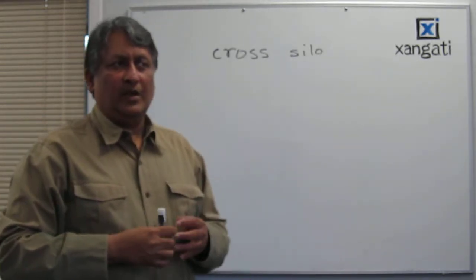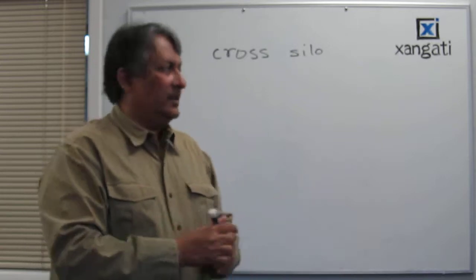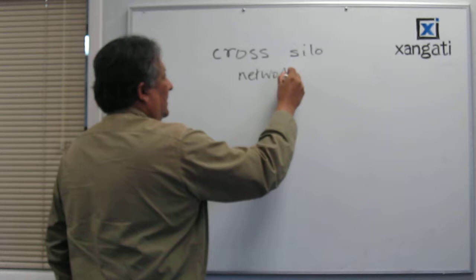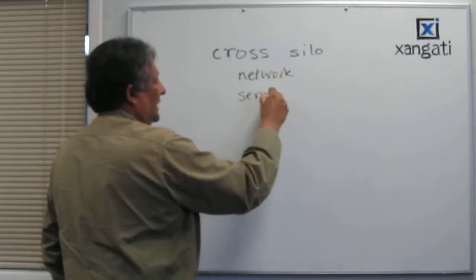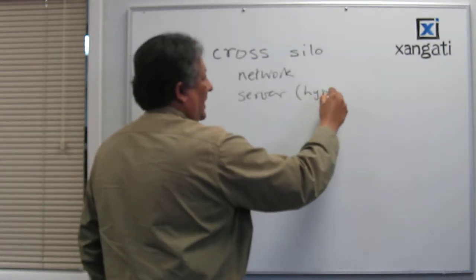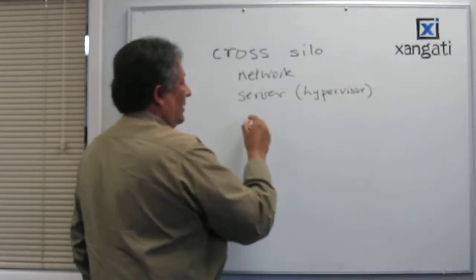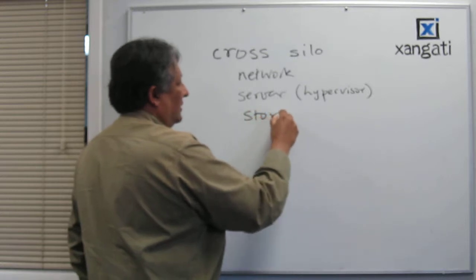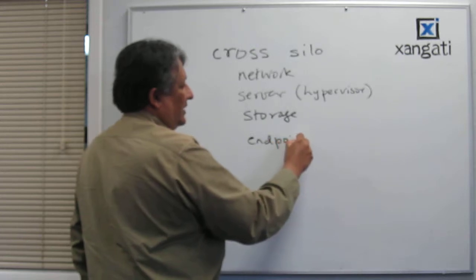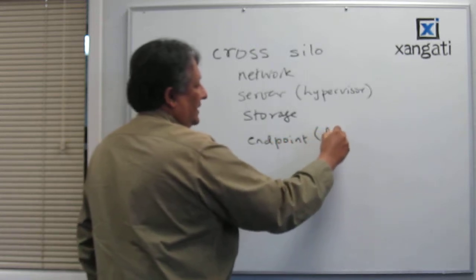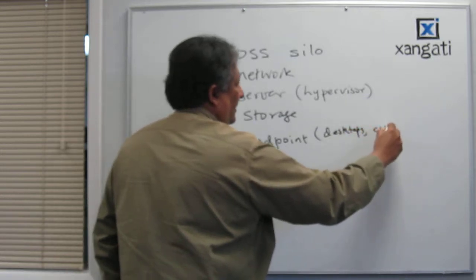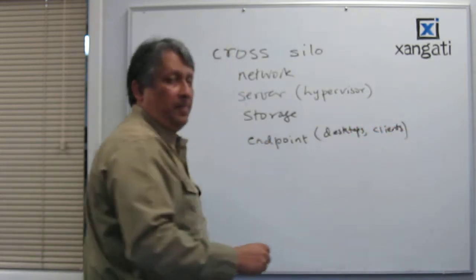So what does cross-silo mean? Cross-silo means you got to deal with the network data, you got to deal with the server data - server meaning typically the hypervisor data. You got to deal with the storage and you often have to deal with what I would call endpoint, which is things like desktops and clients.